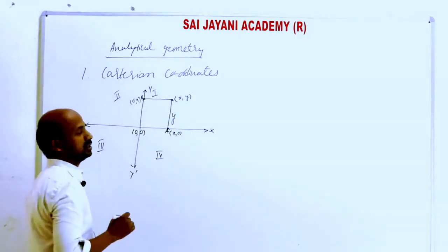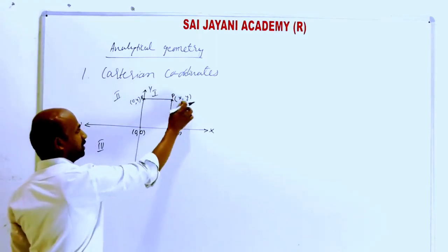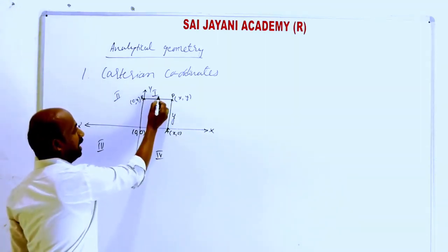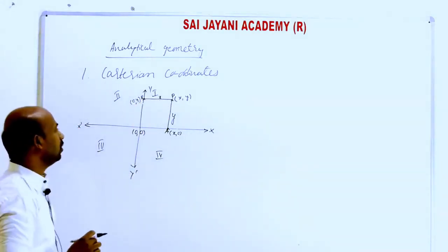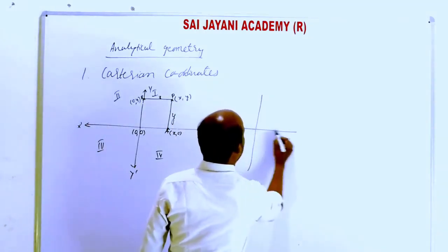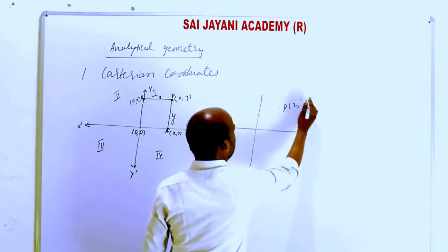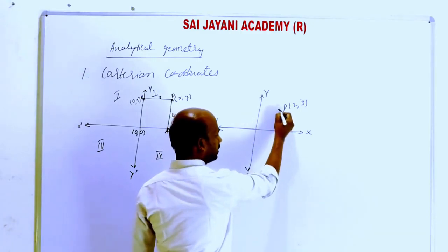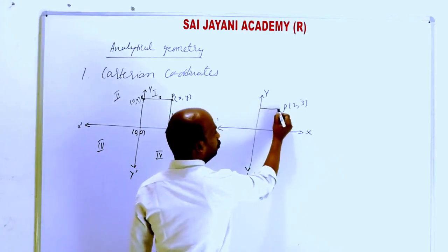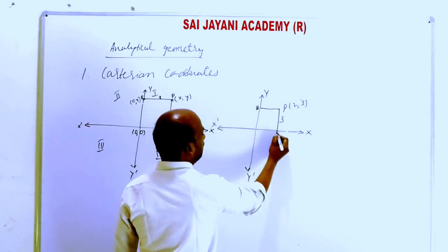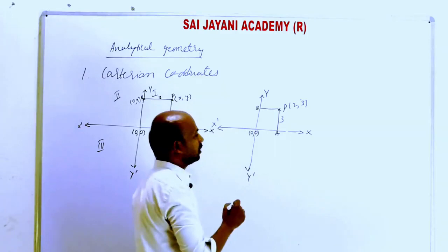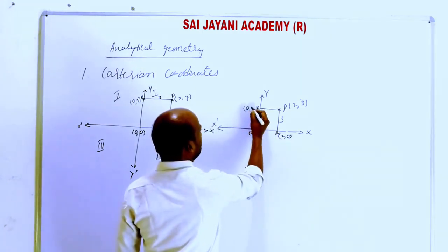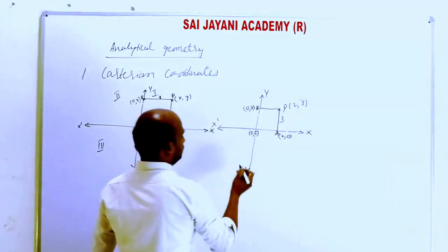Consider point P(x, y). Point P is y units from the x-axis and x units from the y-axis. For example, take point P(2, 3): this point is 3 units from the x-axis and 2 units from the y-axis. Here, the coordinates of point A are (2, 0) and the coordinates of point B are (0, 3).